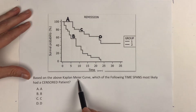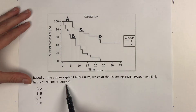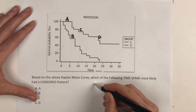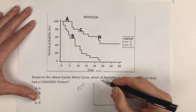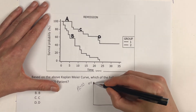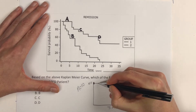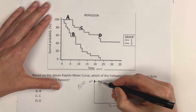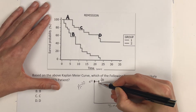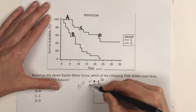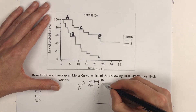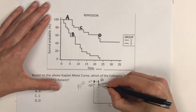Last question: based on the above Kaplan-Meier curve, which time span most likely had a censored patient? To understand how the stair-stepping occurs — if N equals 10 in a study, you start at 100%. As time moves, someone has an event like a myocardial infarction. One person out of 10 had the event, so 10% comes out, and you drop to 90%. Now you're left with nine people in the study.